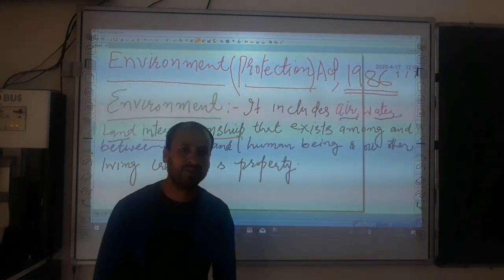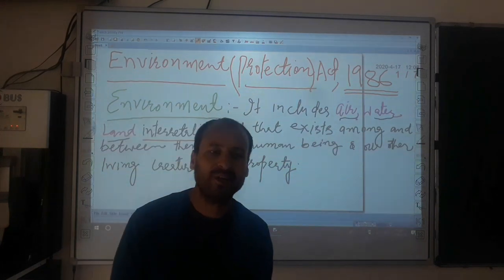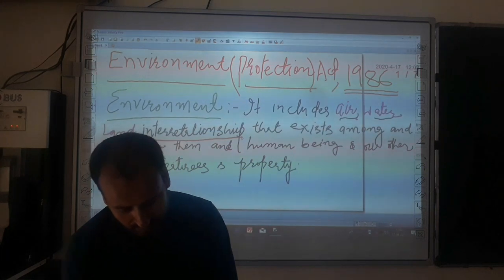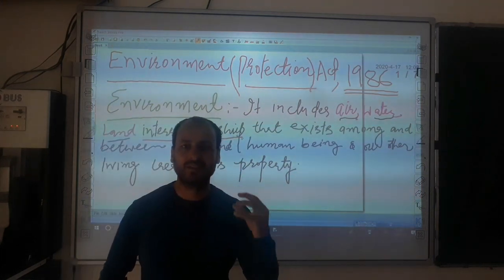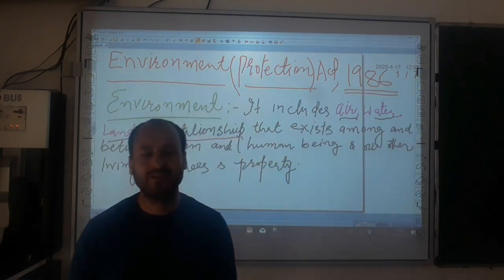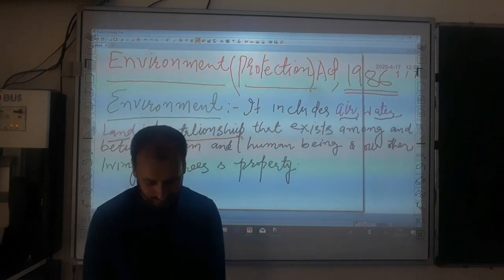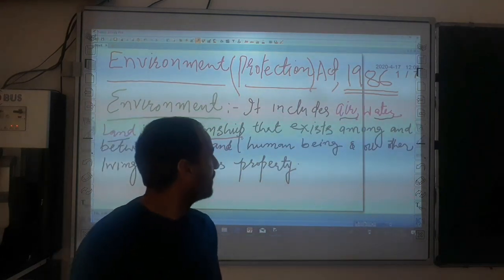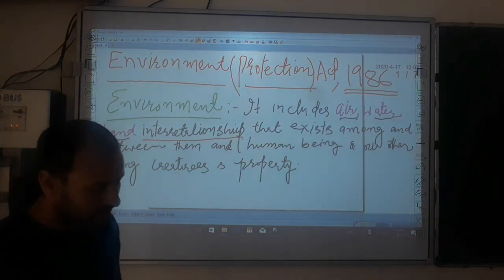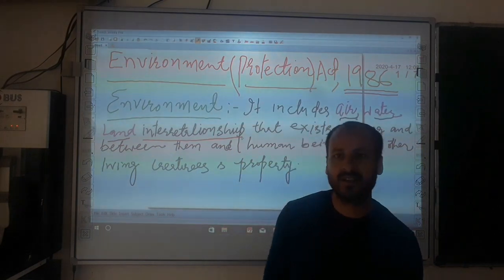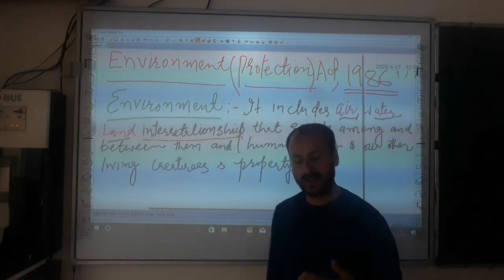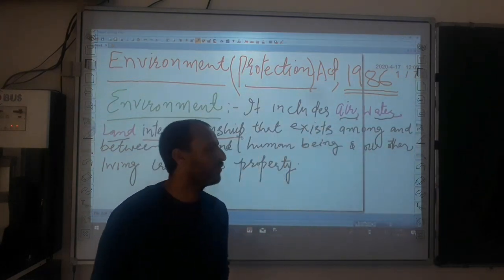So, as per the EPA, environment means it includes air, it includes water, it includes soil, and the interrelationship that exists between them and with human beings and other properties. So the environment means air, water, land, and the interrelationships that such entities have with our generation — that is, with human beings.